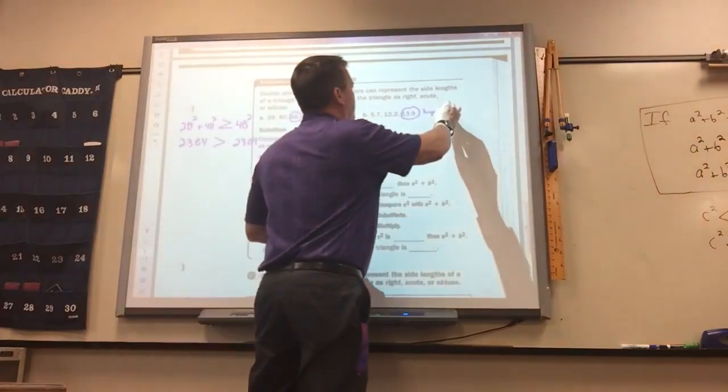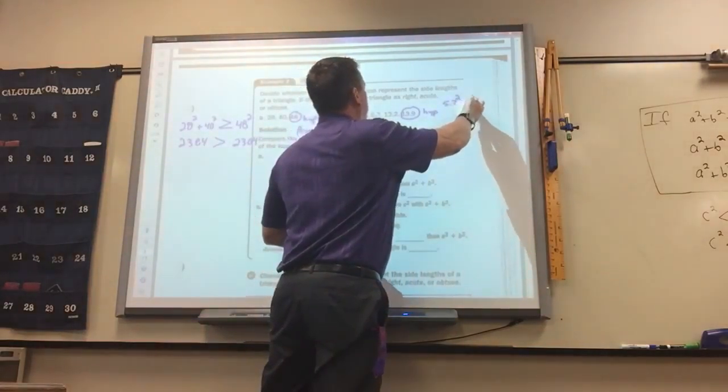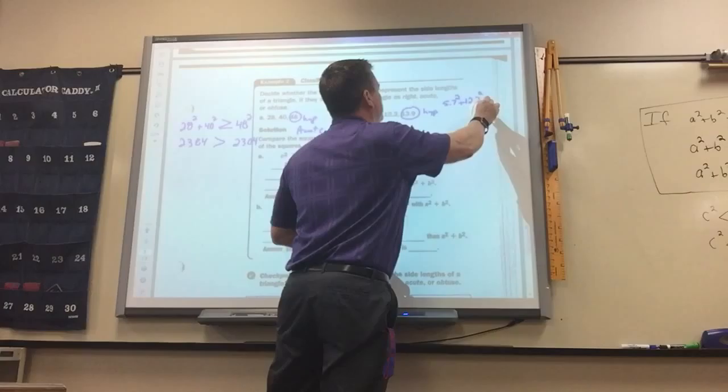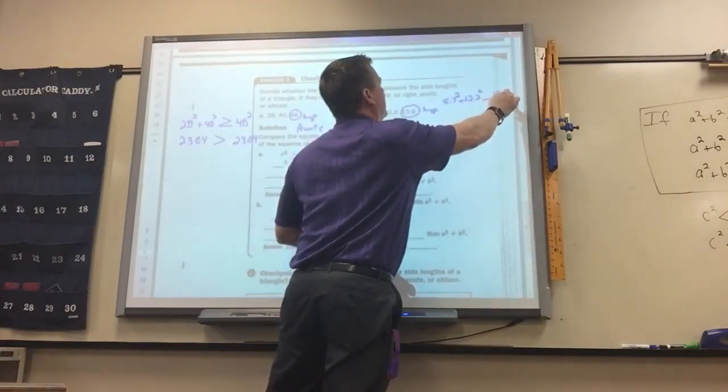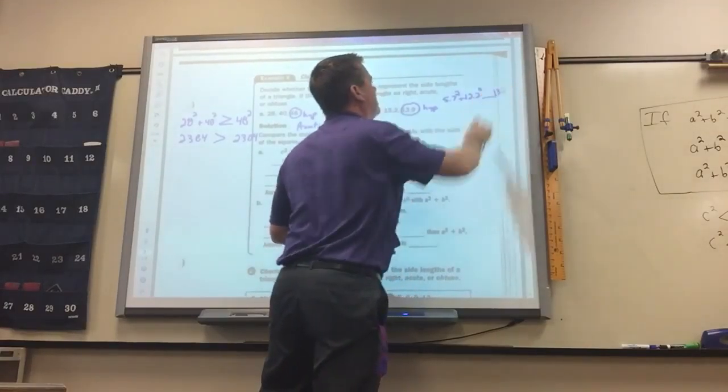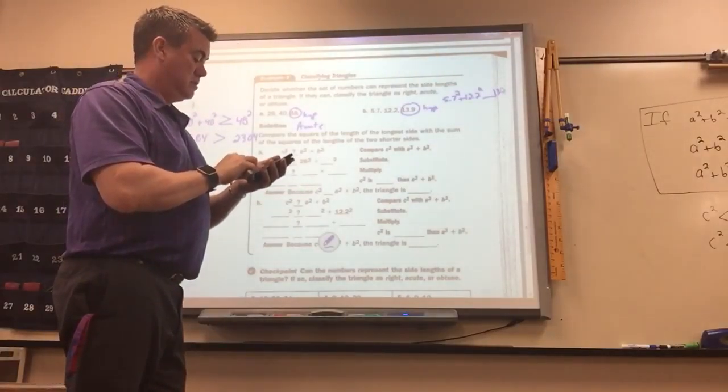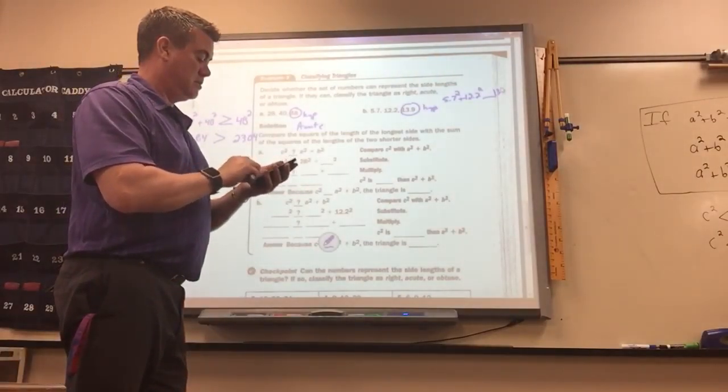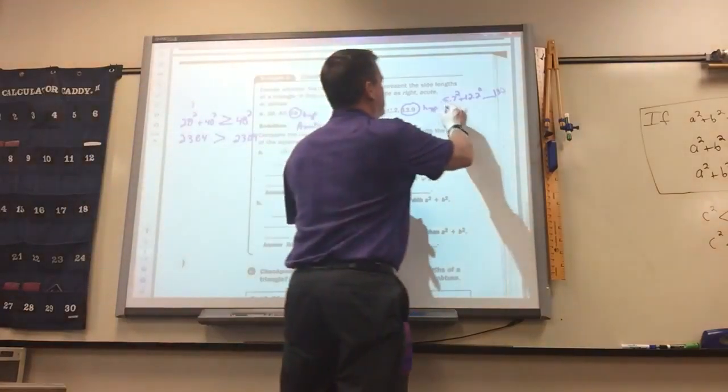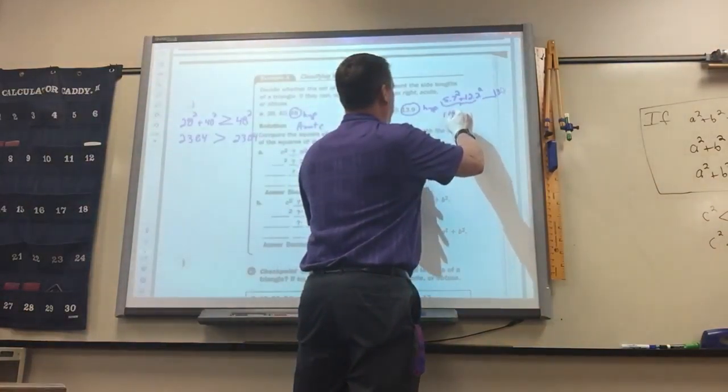So this one, 5.7 squared plus 12.2 squared, how does it compare to 13.9 squared? So this turns out to be 181.33.